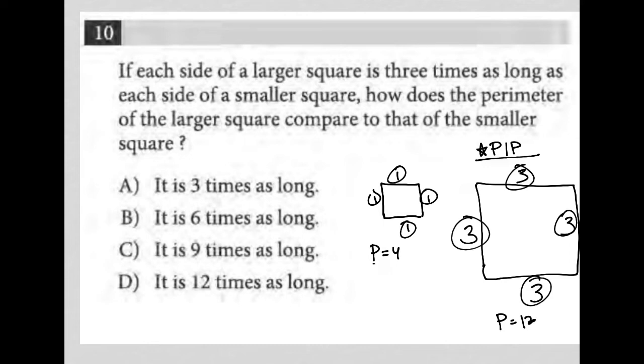So what's the relationship between the perimeter of the small square and the large square? Well, the large square has a perimeter three times larger. In essence, the sides are three times larger and the perimeter is also three times longer.